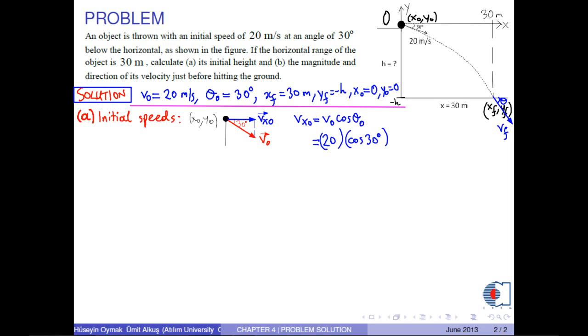And the magnitude of the y component of the initial velocity is calculated to be vy0 equals v0 times sine theta0. With the numerical values, it is calculated to be 10 meters per second.